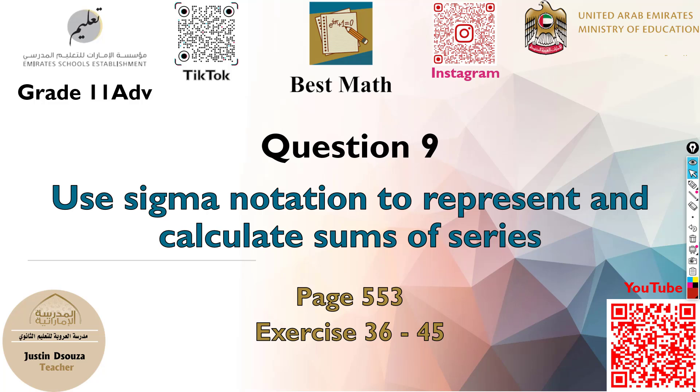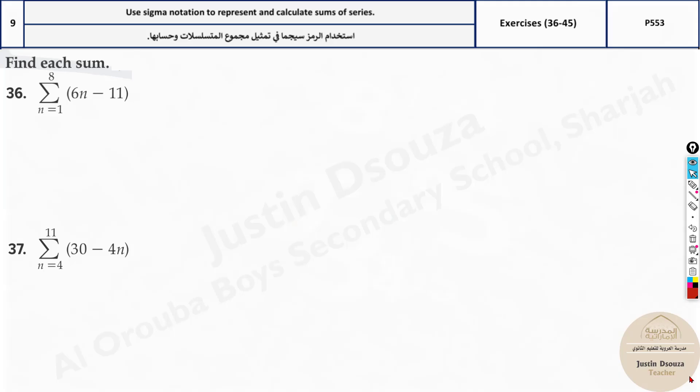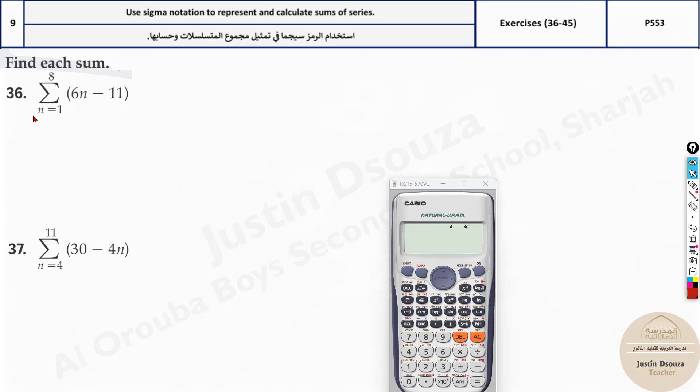Question 9 is one of the easiest of all. All you need is a calculator. All you need to do is press shift and this symbol over here, the logarithmic symbol, and you get the summation notation.